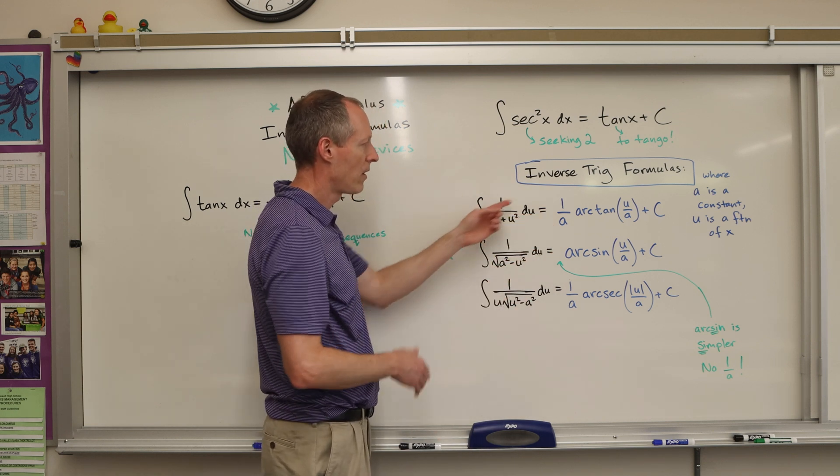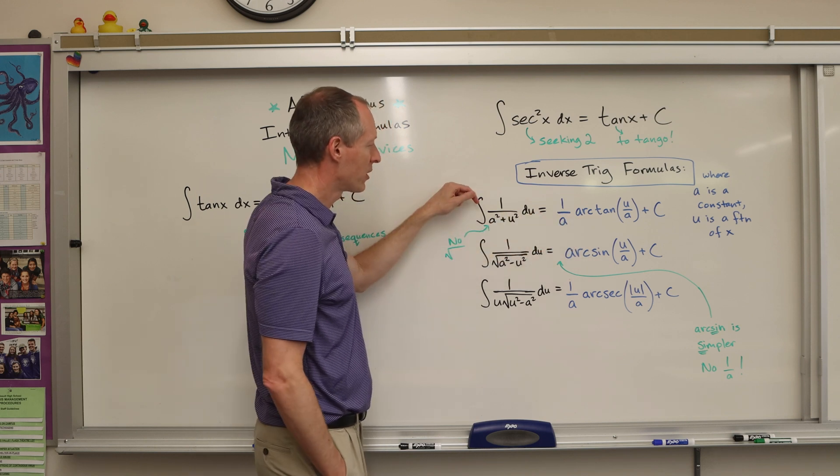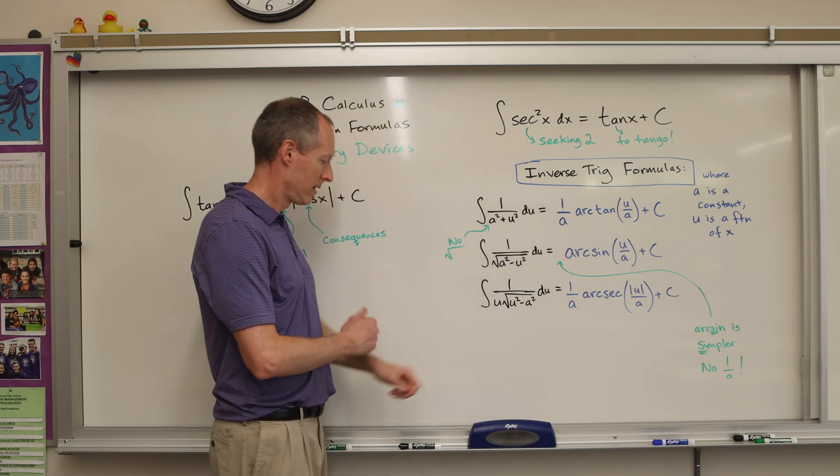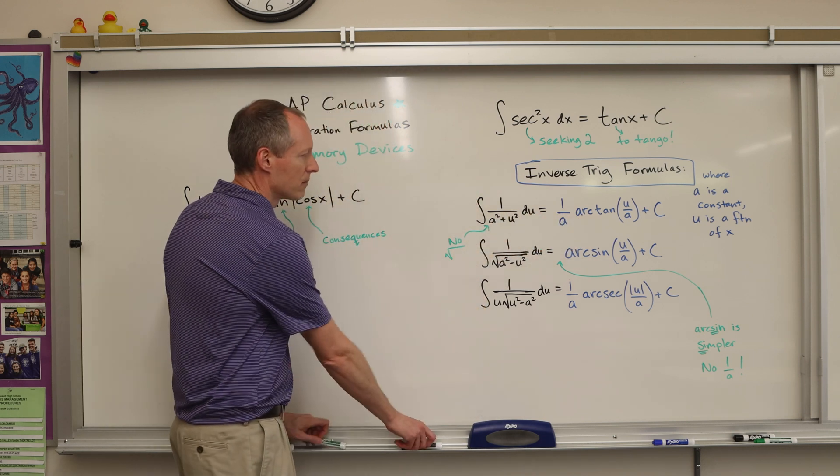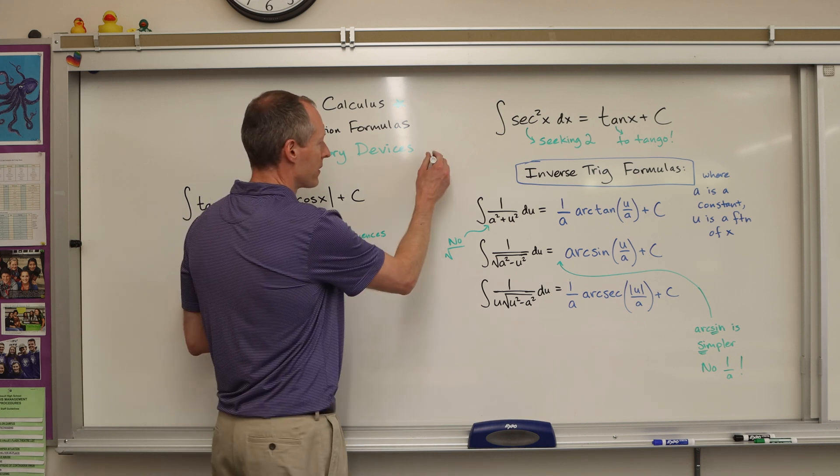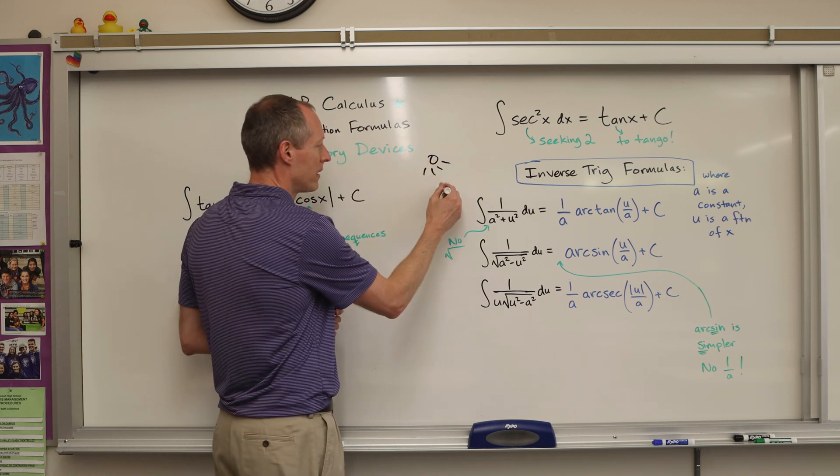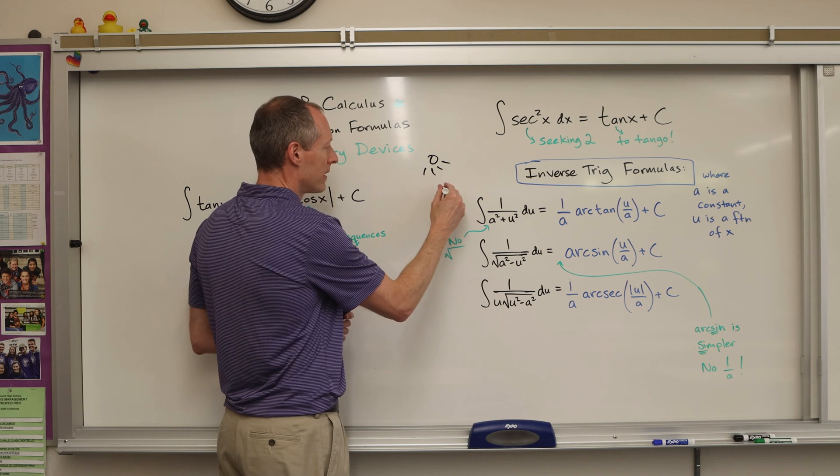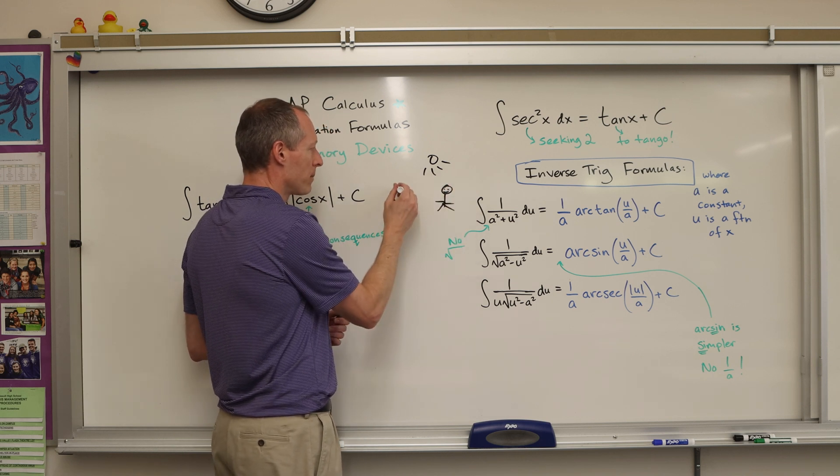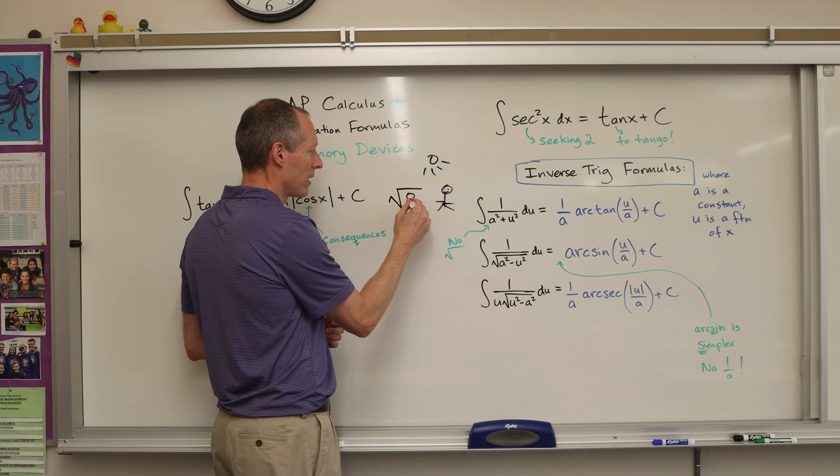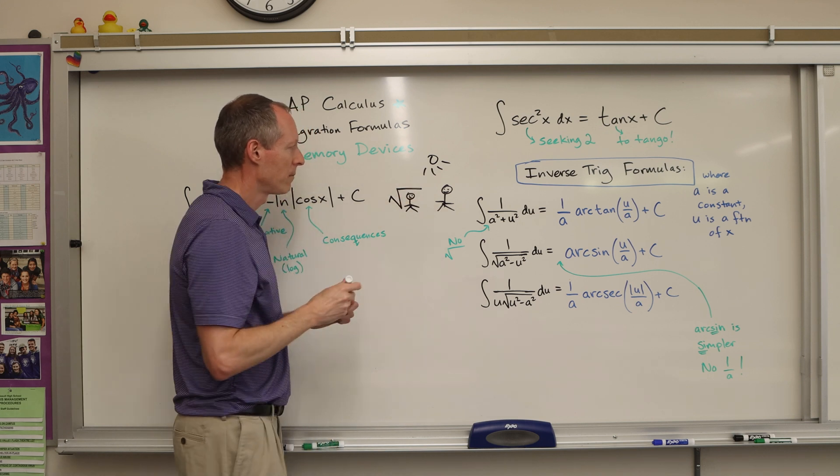Now for the answer for arc tangent, let's go back to the idea of tanning. Let's say, let's say you want to get tanned. So the sun is out, the sun is shining, you want to be out in the sun getting tanned.